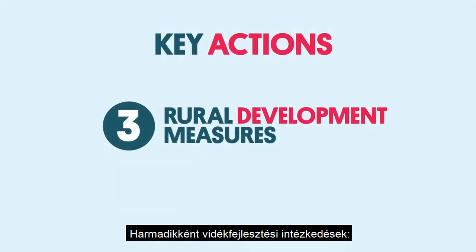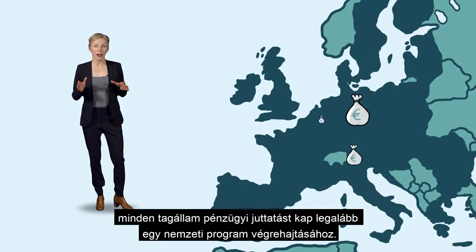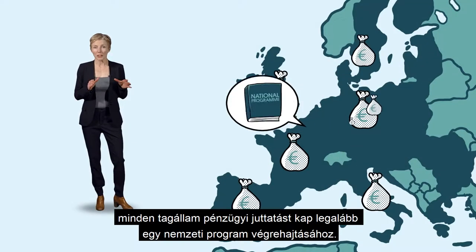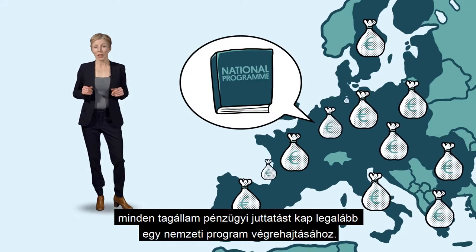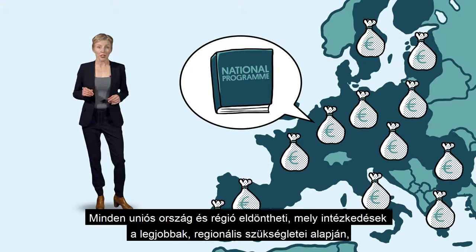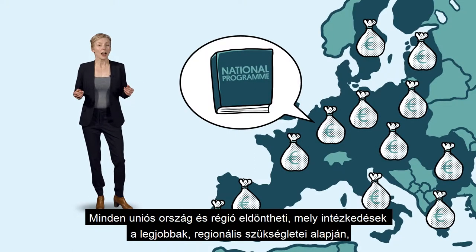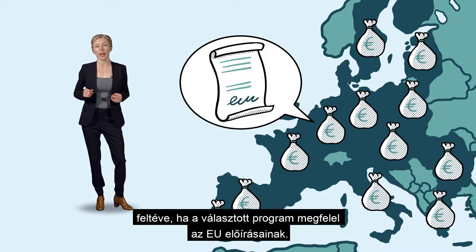Market measures also include the managing of tariff quotas for international trade. And thirdly, rural development measures. Each member state receives a financial allocation to implement at least one national programme, and each EU country and region can decide which measures are best based on their regional needs, under the condition that the chosen programme falls in line with EU standards.